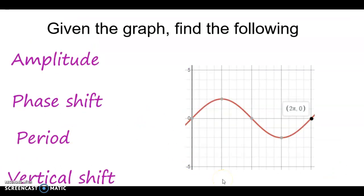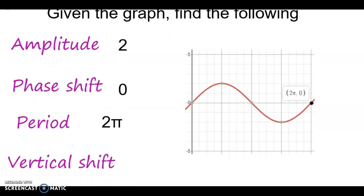All right, so we have this graph here. We're going to find the amplitude, phase shift, period, and vertical shift. So looking at this, the amplitude would go up to 5 here. We're going up 2. So the amplitude would be 2. The phase shift, where it starts? Well, it starts right here at the axis. So that would be 0. Period, we are going from 0 over here to this point, which is 2π. So 0 to 2π, that would be 2π. The vertical shift, it did not go up or down. It started right here on the x-axis. So the vertical shift is 0.